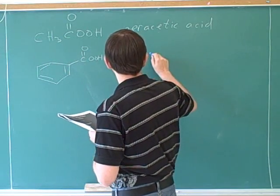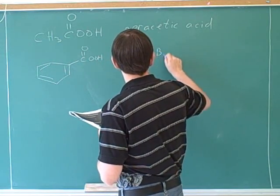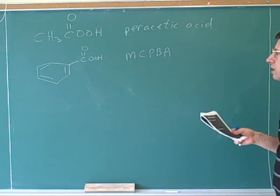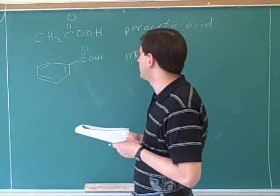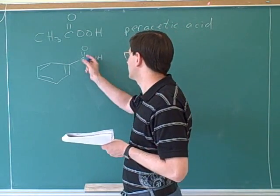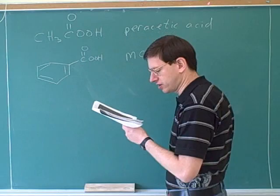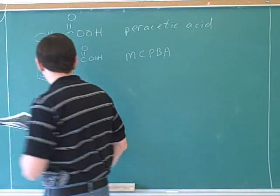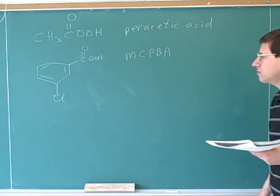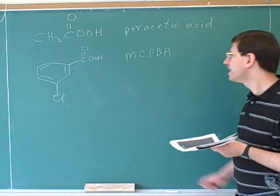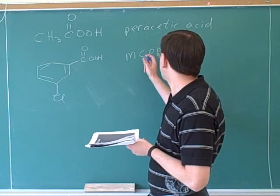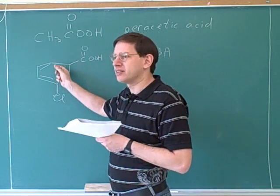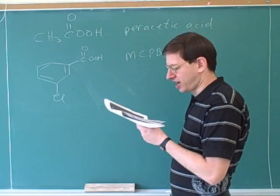This is MCPBA. You can see this is another peracid, because again, we have two oxygens bound to each other. MCPBA. The C stands for chloro. The P stands for per. The B stands for benzene. This is a benzene ring, and this is an acid.